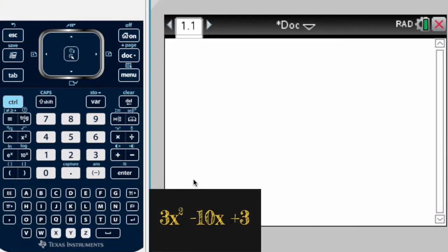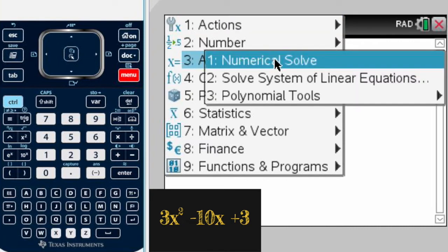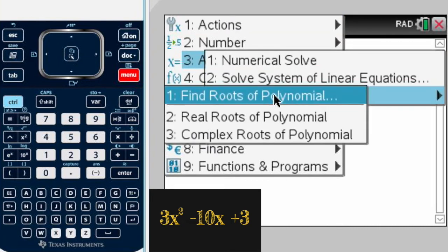We have a first example: 3x to the second power minus 10x plus 3. There are several ways to do it, but this is in my opinion the safest. We're going to go to menu, we're going to go to algebra, and then we're going to select the third option polynomial roots, and right there select the first option find roots of polynomials.